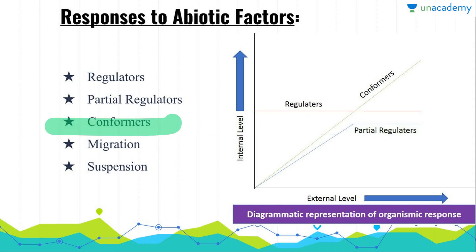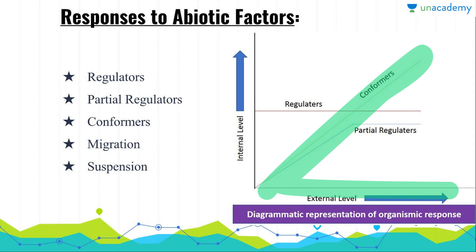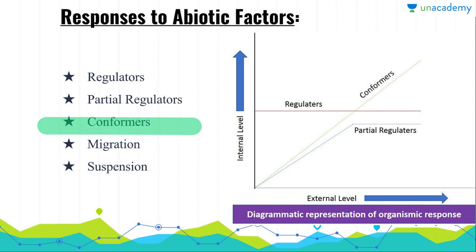Now thirdly, we have conformers. These are organisms in which the internal level changes according to the external environment — the conformer's body temperature changes along with their environment. This adaptability like that of conformers develops only when the environmental range is maximum. If the environmental range is not maximum, then organisms opt to migrate. In the case of migration, the Siberian crane migrates to Keoladeo National Park in Bharatpur during winter, and after the end of the winter season they return to their natural habitat.